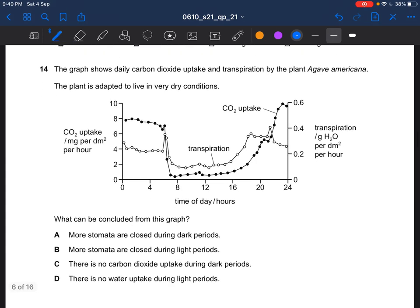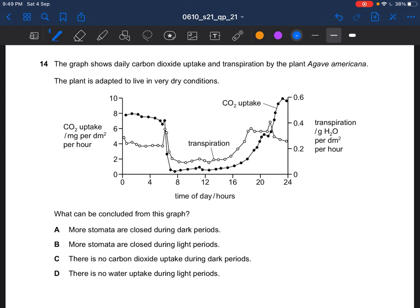Next question. The graph shows daily carbon dioxide uptake and transpiration by the plant Agave americana. The plant is adapted to live in very dry conditions. What can be concluded from this graph? I think around this to this would be the light period. The answer would be B. More stomata are closed during light periods. Since, as you can see, there is lower carbon dioxide uptake, meaning that there is lesser gas exchange. And there is also lesser transpiration, lesser loss of water vapor. And it's all because the stomata, well, more stomata are closed.